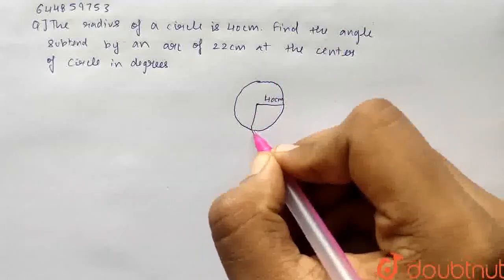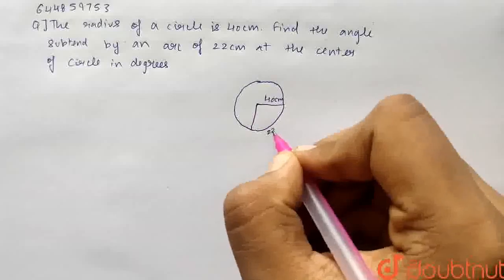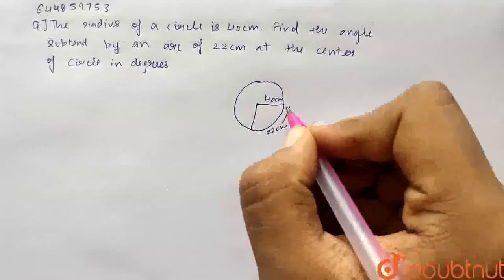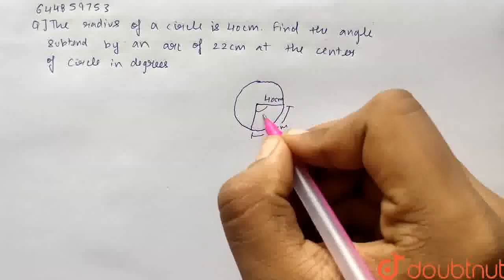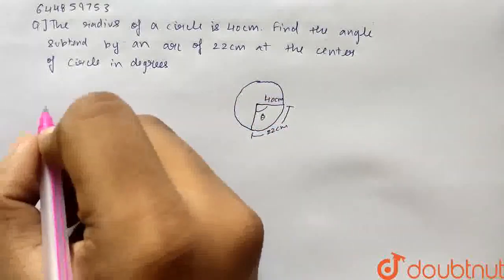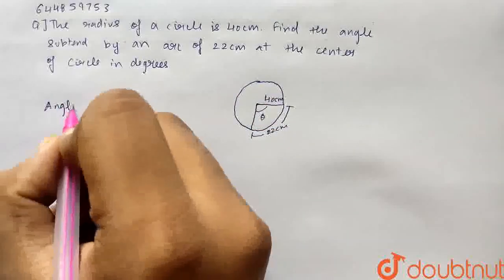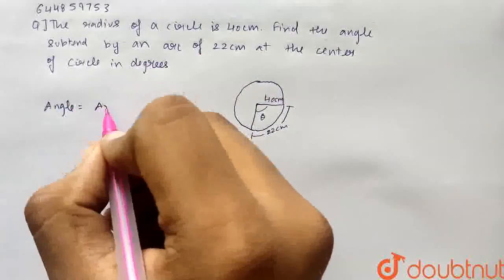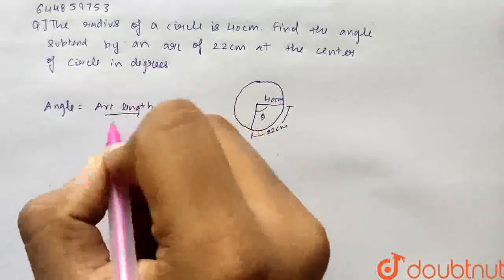So the length of the arc is basically 22 cm. So I will draw an arc. So this length is basically 22 cm. We have to find the angle theta. So now we know that angle equals arc length upon radius.